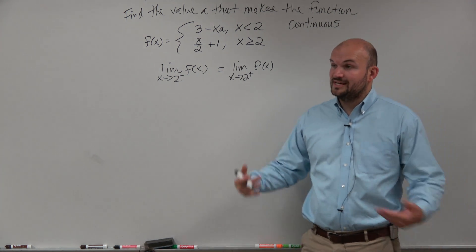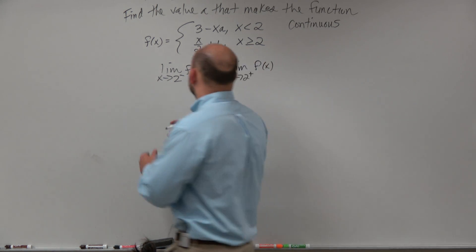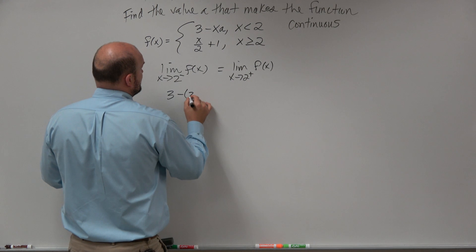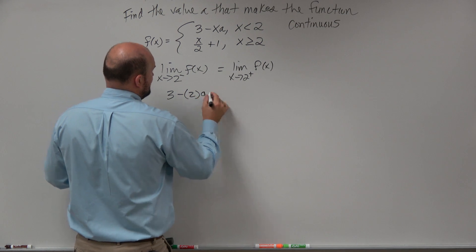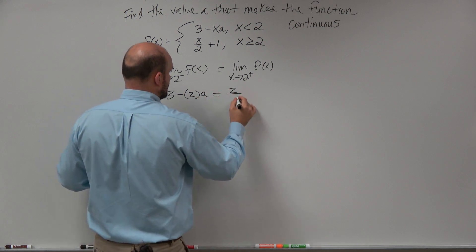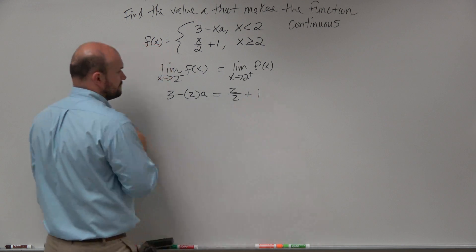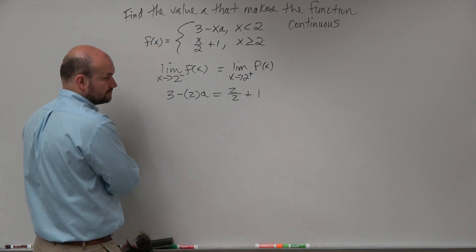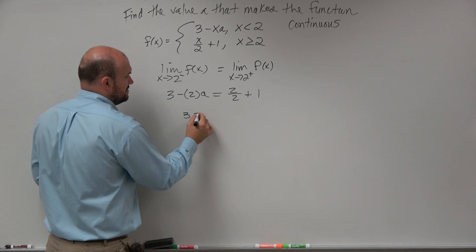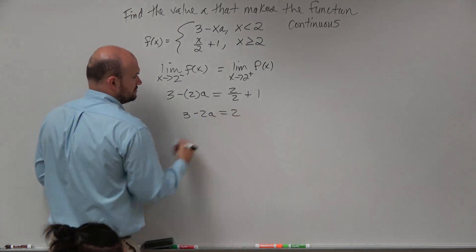Now we can evaluate them — plug them in, just like we did on the last one. So we'd have 3 minus 2a has to equal 2 over 2 plus 1. When simplifying this, we have 3 minus 2a equals 2.